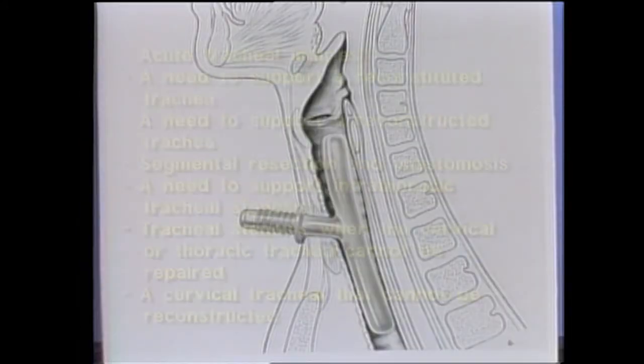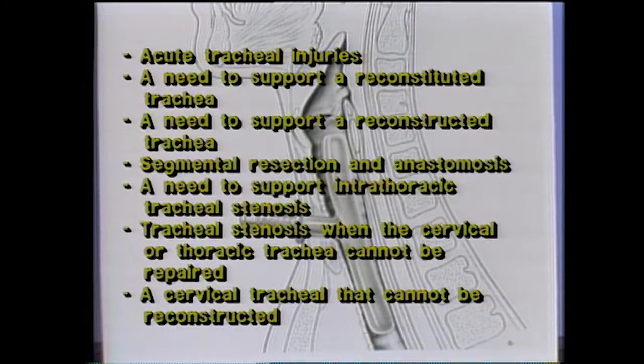The Montgomery safety tube should be used in cases with acute tracheal injuries, a need to support a reconstituted or reconstructed trachea, segmental resection and anastomosis, a need to support intrathoracic tracheal stenosis, tracheal stenosis when the cervical or thoracic trachea cannot be repaired, and a cervical trachea that cannot be reconstructed.